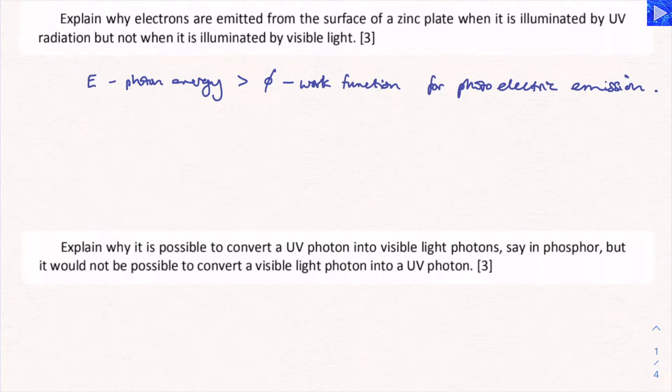Now we need to refer specifically to photons in UV radiation and those in visible radiation. UV photons have energy larger than the work function, so therefore electrons will be emitted. Visible photons, however, have energy less than the work function for zinc. Therefore electrons will not be emitted by visible radiation.